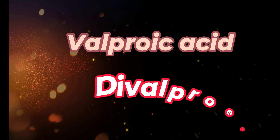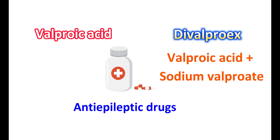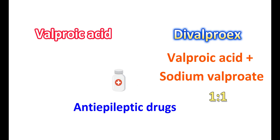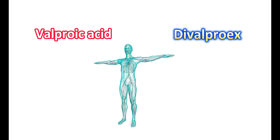Today in this video, let us discuss the differences between valproic acid and divalproex. Both are classified as anti-epileptic drugs. Interestingly, divalproex is a combination of valproic acid — the prefix 'di' indicates two forms are combined in a single formulation. Divalproex contains both valproic acid and sodium valproate in a ratio of 1:1, making it a combination of valproic acid and its base in equal proportions. So both medications contain the same component — valproic acid — however, their different formulations and compositions give them different pharmacokinetic and pharmacodynamic properties.